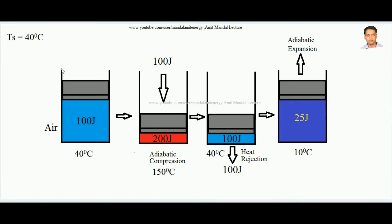To understand this, consider a piston-cylinder system. This is a cylinder in which a piston is fitted and can slide inside. Inside this system there is some air, and the walls of the cylinder are conducting, meaning heat can go in and out. The surrounding temperature is 40 degrees centigrade, and the system is initially in thermal equilibrium with the surrounding, so the inside temperature is also 40 degrees centigrade.